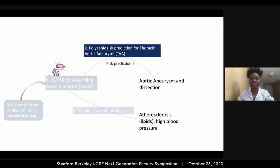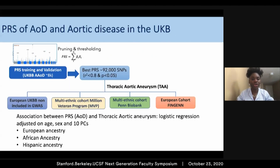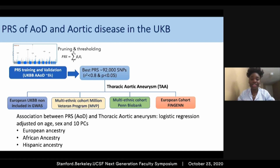Now I'm going to talk about polygenic risk prediction for thoracic aortic aneurysm. I developed a polygenic risk score using a classical pruning and thresholding method. Our PRS was trained and validated in an independent set of 8,000 individuals from the UK Biobank with cardiac MRI and genetic information available. The best PRS contained over 92,000 SNPs with an r² correlation less than 0.8 and a p-value less than 0.05.